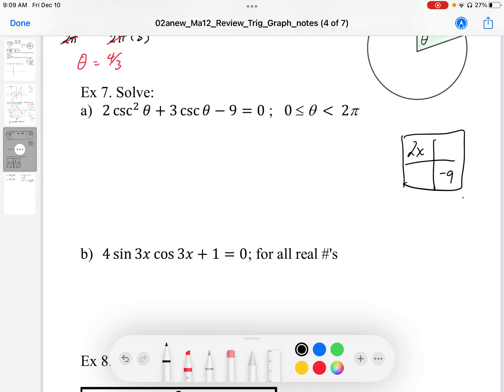I know that I'm looking for two numbers that multiply to negative 18 and they have a difference of 3. Well, that's going to be positive 6 and negative 3. So when I factor this, I get 2x minus 3, and then x plus 3.